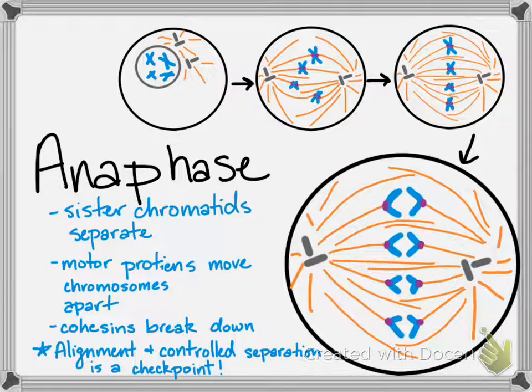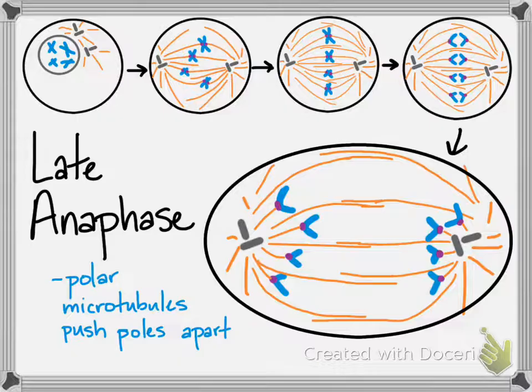The alignment at the metaphase plate and confirming all spindle fibers are attached before anaphase begins is a controlled checkpoint in the cell cycle — that is the major mitotic checkpoint. During late anaphase, the polar microtubules start to walk past each other, which pushes outward on the cell. By this point, the genetic material is pretty well separated to different sides of the cell.